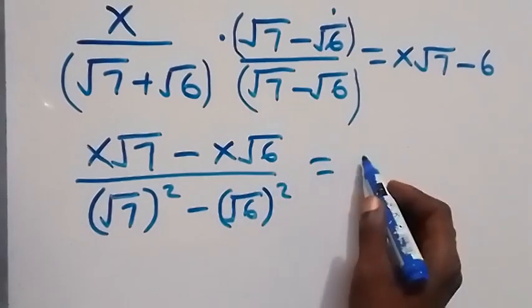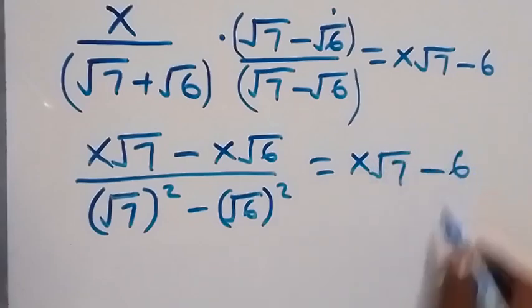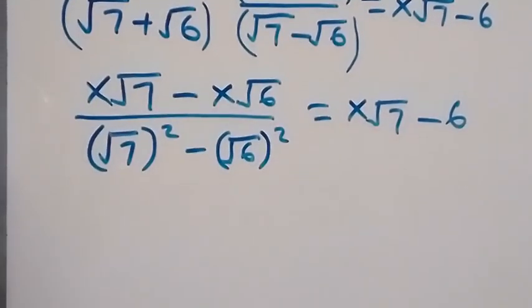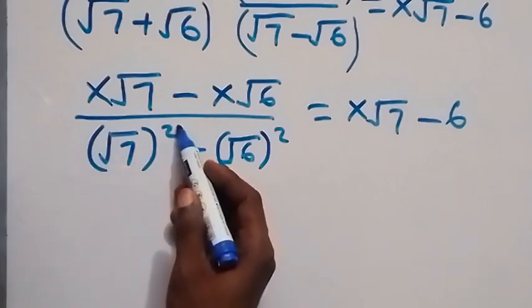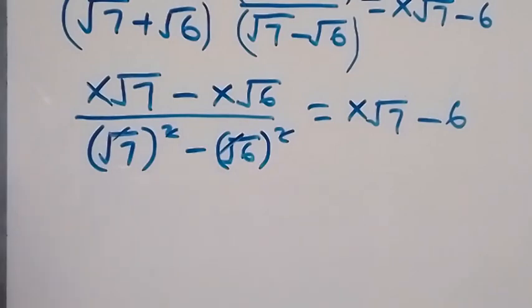Then this is equal to x root 7 minus 6. And in the next step, we have root 7 square, square we cancel square root, remain 7. Also from here, square cancel square root.